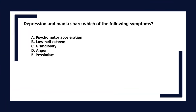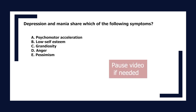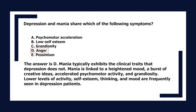Depression and mania share which symptom? A. Psychomotor acceleration, B. Low self-esteem, C. Grandiosity, D. Anger, E. Pessimism. The answer is D. Mania exhibits heightened mood, burst of creative ideas, accelerated psychomotor activity, and grandiosity. Lower levels of activity, self-esteem, thinking, and mood are frequently seen in depressed patients. Anger is shared by both.